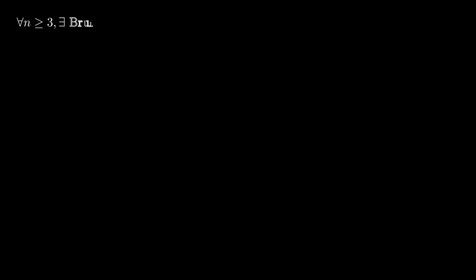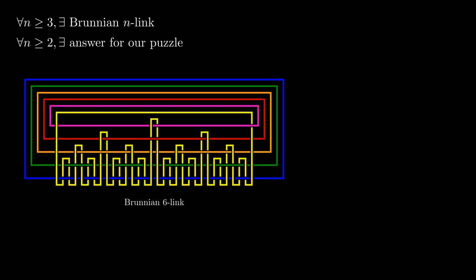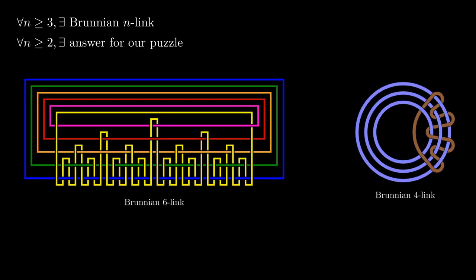When Brunian studied these special links, he gave a construction for every n greater than 2. That means we have an answer for the n-nail puzzle for any n natural number greater or equal to 2. The bad part is the combinatorial complexity of this solution because the size of it grows exponentially with n. For example, here is how a Brunian 6-link would look. Compare it to a Brunian 4-link.